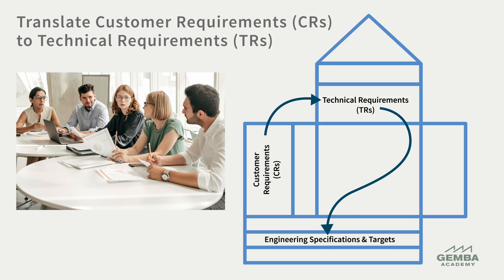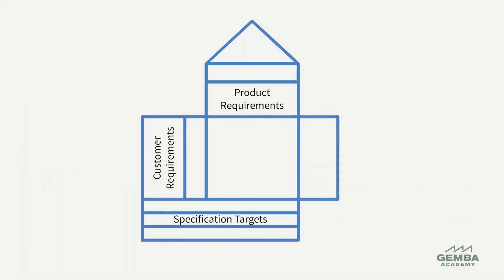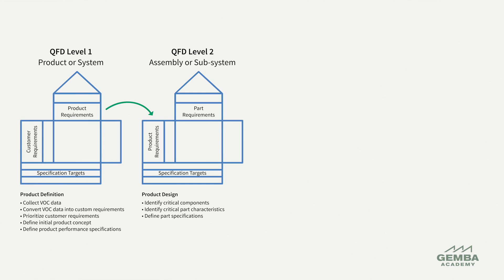After we've completed the top-level matrix, or House of Quality, we deploy our findings to the next level to address the critical items. These items progress from the product definition at level 1 to designing systems and components of the product at level 2.